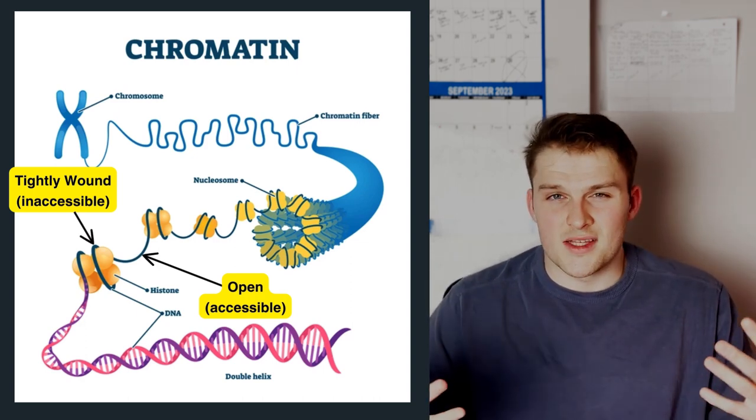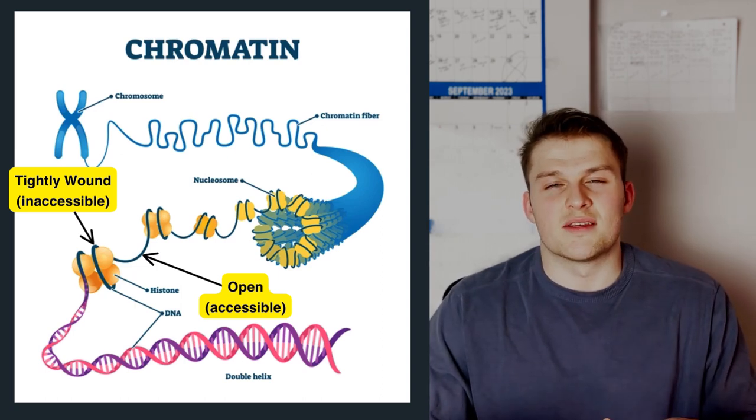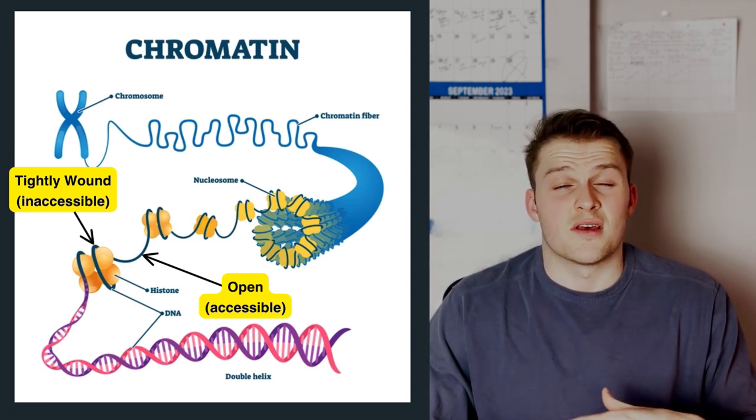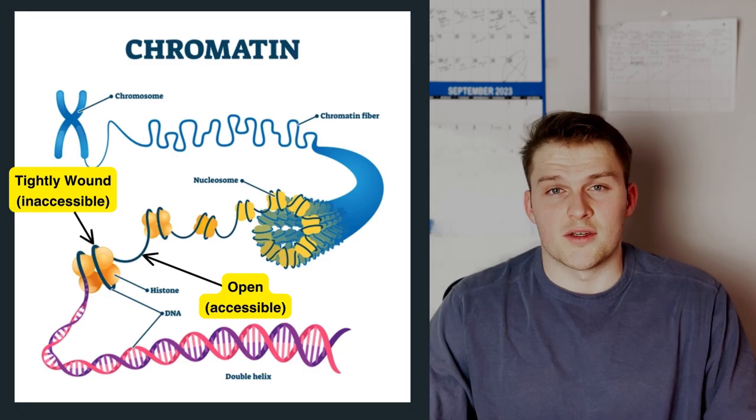When proteins bind to these accessible regions, they can kick-start many processes such as transcription or DNA replication. But here's the challenge: with such a vast and dynamic landscape of chromatin in our genome, how do we determine which parts are in the open state and which parts are in the more tightly wound, closed-off state?